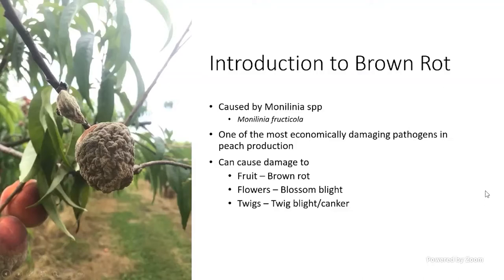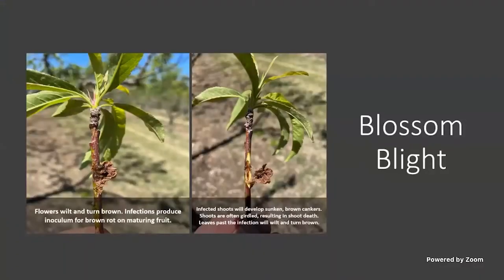Brown rot can also affect bloom — we call that blossom blight — and from those blossom blights we get twig blight or canker. We need to look at controlling blossom blight to help prevent inoculum for brown rot later in the season. The blighted flowers will wilt and turn brown, and you'll see a gummy substance oozing from the blossom, which produces inoculum for brown rot on mature fruit.